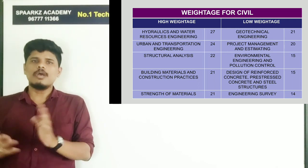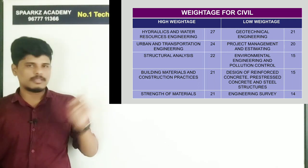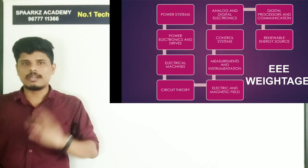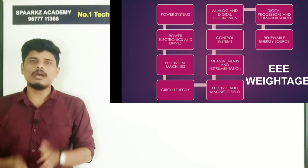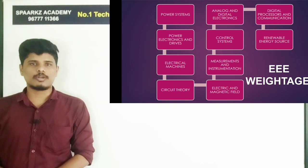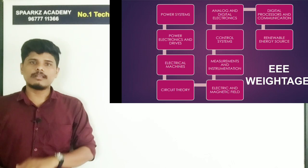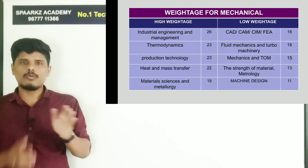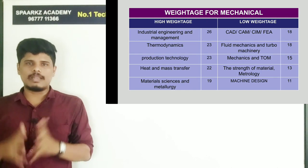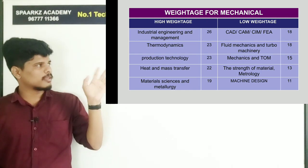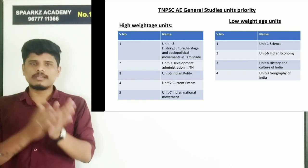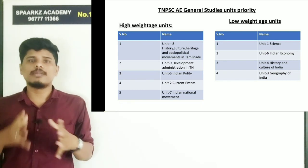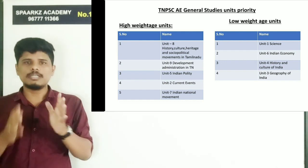For high-weightage topics, you can allocate extra time, and for low-weightage topics, you can cover them with average time spent. That is the triple-E weightage strategy. The next section is mechanical — there is a weightage planner so you can see all the subject areas. The next section is general studies, and there is also a planner so you can see all the weightages.